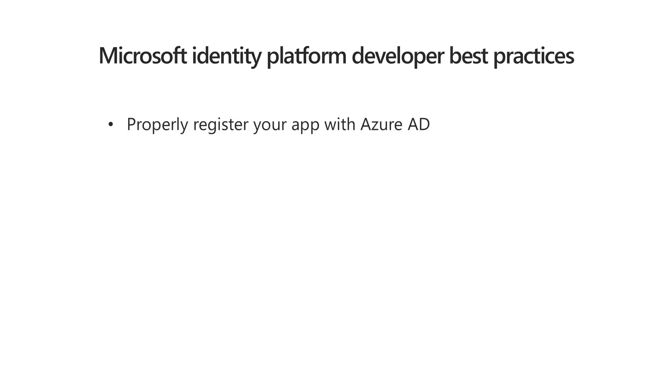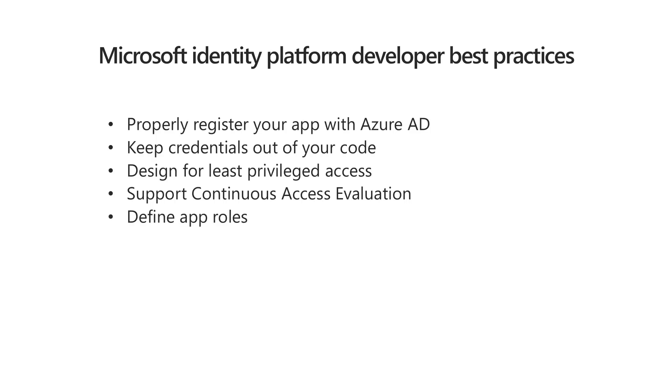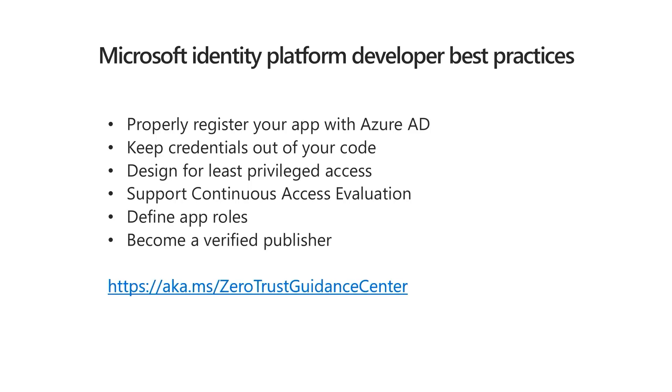We've talked about how technology partners can integrate with Azure Active Directory to create Zero Trust solutions for customers. But if you're creating an app, you'll also want to make sure that your app itself is adhering to Zero Trust best practices. To support this, we've published best practices for developers using the Microsoft Identity platform. These include properly registering your app with Azure AD, keeping credentials out of your code, designing for least privileged access, supporting continuous access evaluation, defining app roles, and becoming a verified publisher. We've published these Zero Trust best practices at aka.ms/zerotrustguidancecenter.